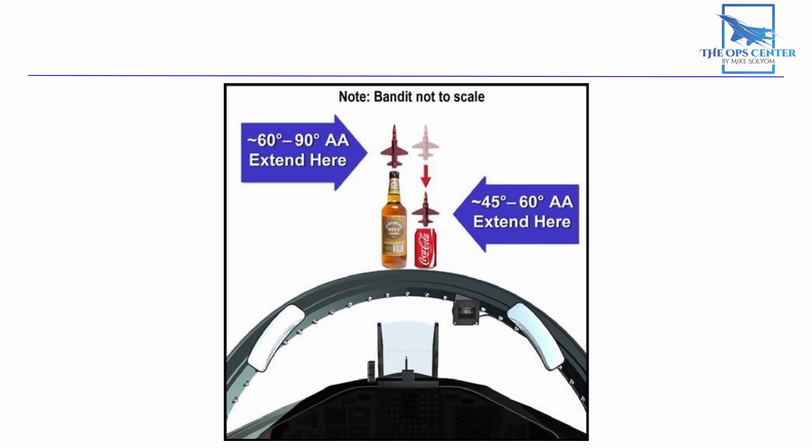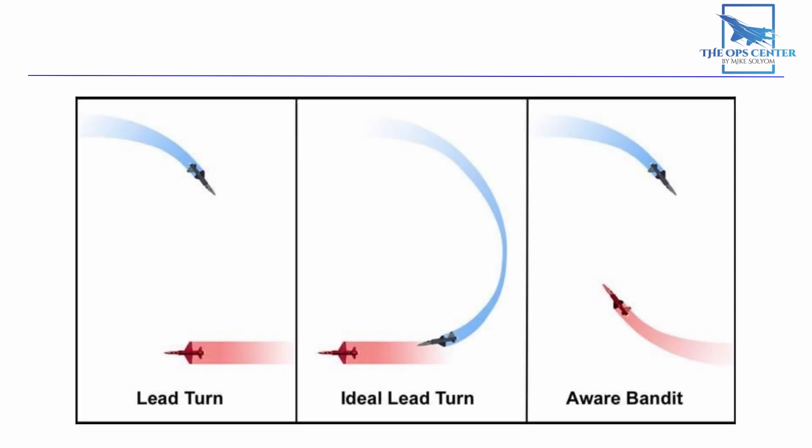If the Bandit is above that, it means he's coming towards you and your high aspect. When that happens, we go into a lead turn, just like before.